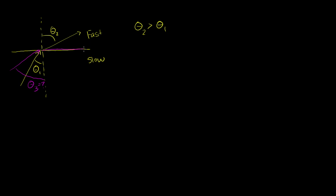If that's the case, the light is actually never going to escape into the fast medium. And if I had an incident angle larger than theta 3 — so let's add an incident angle like that — the light won't actually even travel along the surface, it definitely won't escape, it won't even travel on the surface, but it'll actually reflect back. So you actually have something called total internal reflection.